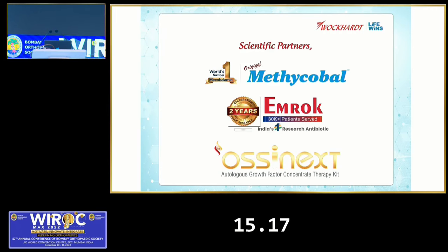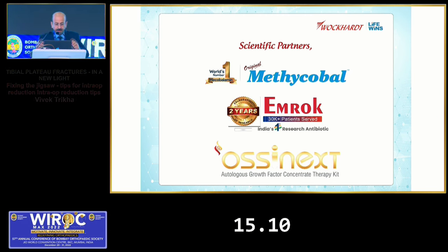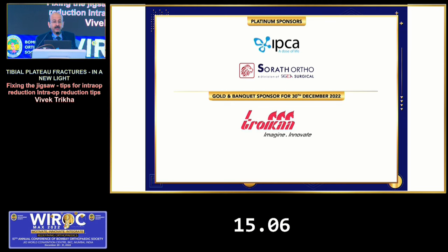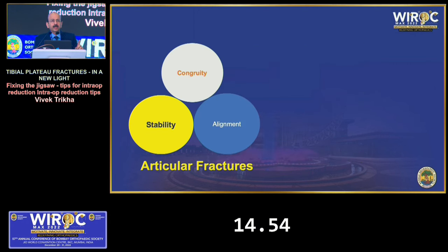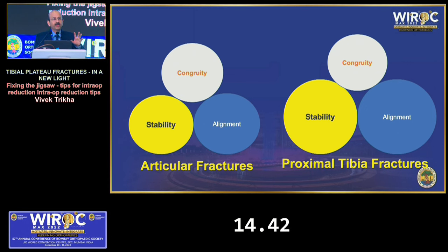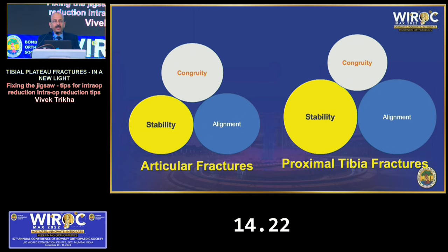May I invite Dr. Vivek Trikha to deliver the next lecture. Thank you sir. I will be speaking about intraoperative tips for success, which most previous speakers have already covered. I will give four or five tips that are slightly different. The first tip: articular fractures depend upon congruity, stability and alignment. The proximal tibia is slightly different — alignment and stability become more important in the knee. In type 5 and type 6 fractures, alignment becomes paramount in intraoperative reduction. The tip is that most implants should be parallel to the proximal tibia or the joint line.